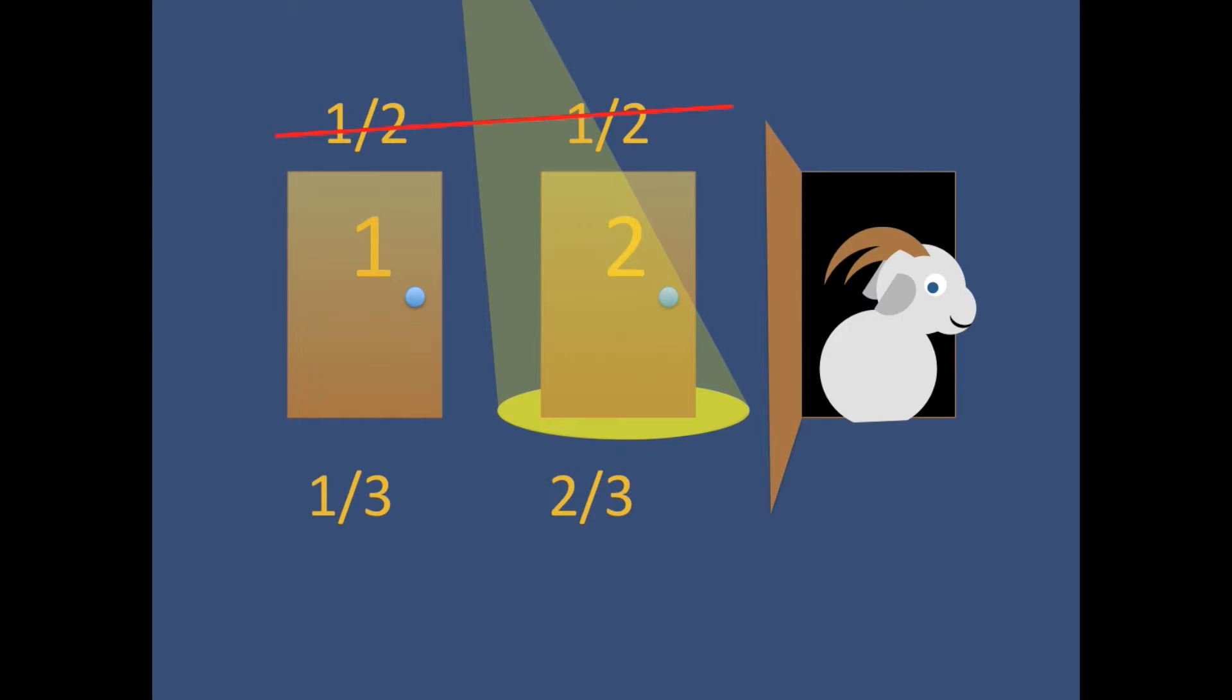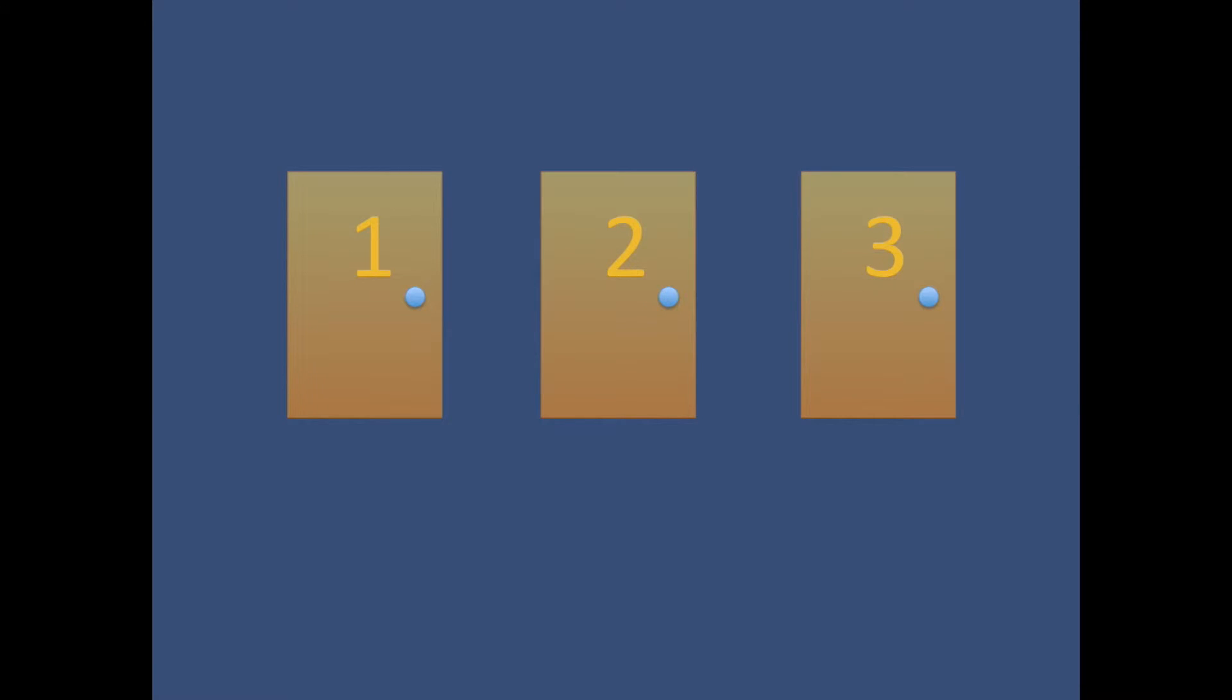Let's work through this one step at a time. When you have no idea what is behind any door, each door has a one in three chance of having the car. When you pick door one, you have a one in three chance of picking the car, and a two in three chance of not picking the car.